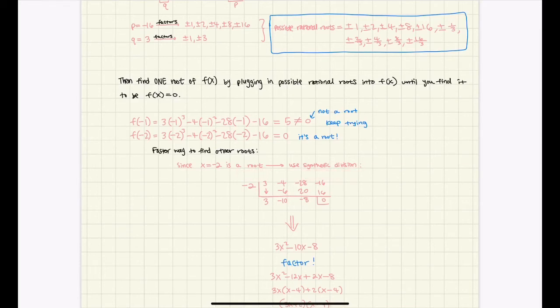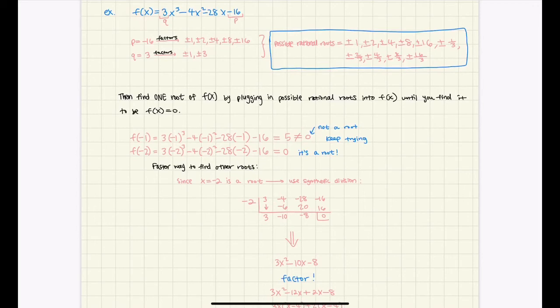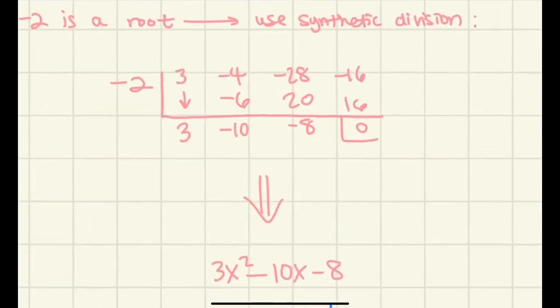So since negative 2, we would put it out there, and then you would use synthetic division, and you would just put in, so as you can see from f of x here, it would be 3 and then negative 4, negative 28, negative 16. So 3, negative 4, negative 28, negative 16, and you just carry out synthetic division.